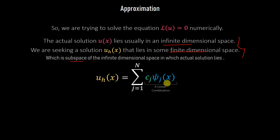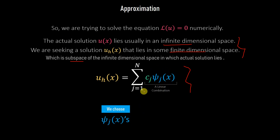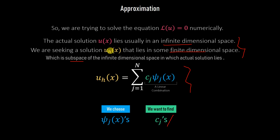The approximate solution is constructed as a summation of a product of two things: one is a function that we choose — the basis functions ψ_j — and the other are the scalar coefficients c_j that we want to find out, so that we can represent our approximate solution as close as possible to the actual solution. We choose the ψ_j's and we want to find out the c_j's.